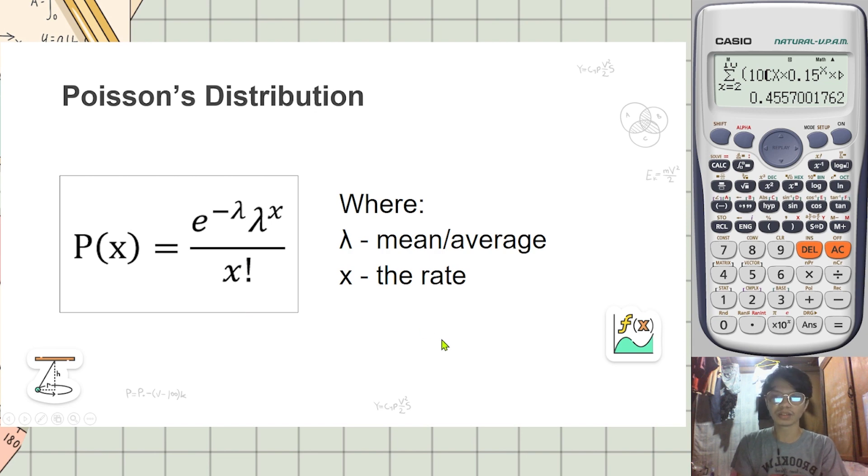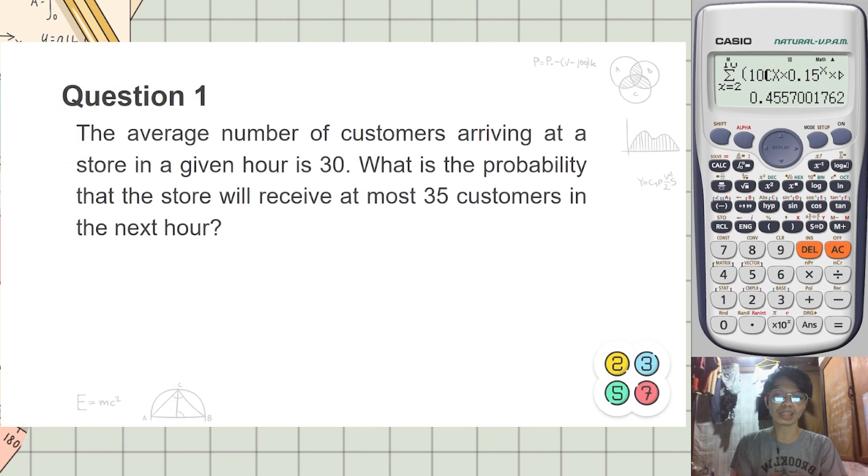Question one, para mas maintindihan natin. The average number of customers arriving at a store in a given hour is 30. What is the probability that the store will receive at most 35 customers in the next hour? At most 35 customers means that's the maximum, so our rate starts from zero customers. We will use summation technique here.